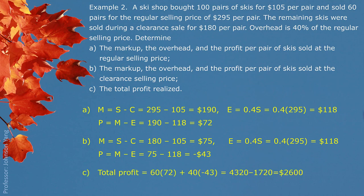Part C: The total profit realized. Question gives us 60 pairs being sold at regular selling price. In that case, rest part 40 being sold at clearance selling price. 60 pairs, each one we make $72 profit.